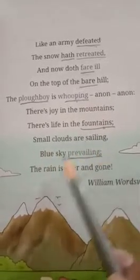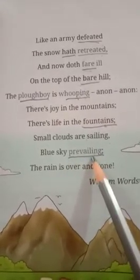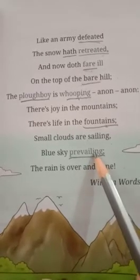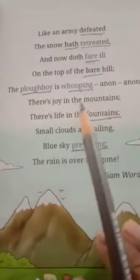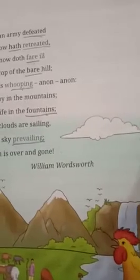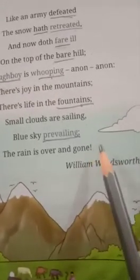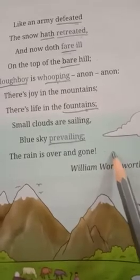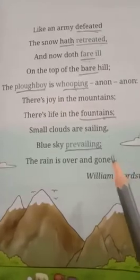Small clouds are sailing, blue sky prevailing. Prevailing means existing — the sky is also clear now, clear and blue, with small clouds floating smoothly in the air. The days of rough climate have gone. What is rough climate here? Winter. Winter and rainy season is over and gone.